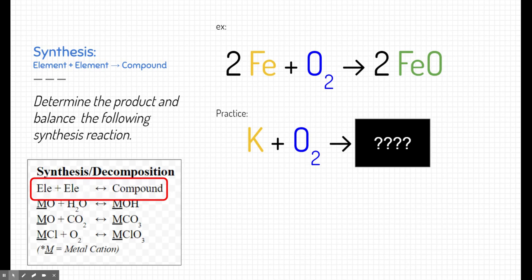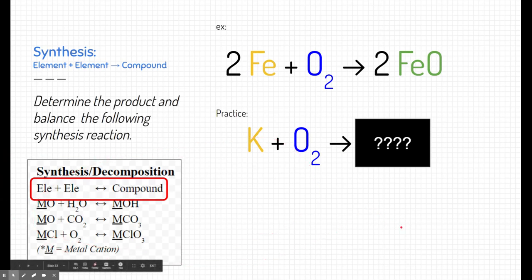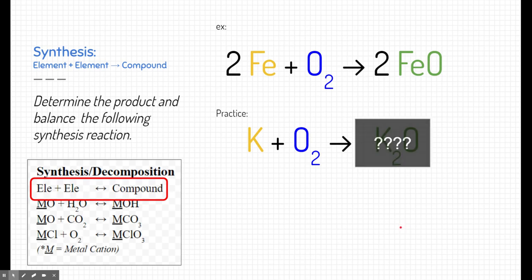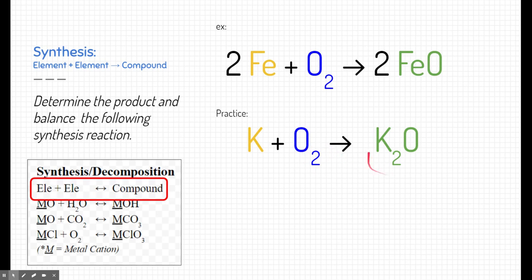Let's go over each of the different types of synthesis reactions. The first type: an element and an element makes a compound. Here at the top is an example. Try to pause this video and figure out what the product is based on the chart on the left. Potassium and oxygen are both elements and they combine to make potassium oxide. The subscript 2 appears because potassium has a charge of +1 and oxygen has a charge of −2. Note that subscripts don't carry over into the product — we write the product based on whether it's an element, diatomic element, ionic compound, or covalent compound. To balance, we add a coefficient of 4 in front of potassium and 2 in front of potassium oxide.